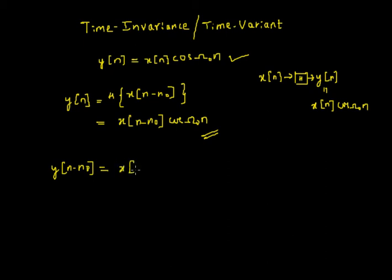This equals x[n - n₀] times cosine of ω₀, and here I find another n, so that also has to be replaced with n - n₀. So this is what I get in the second half.